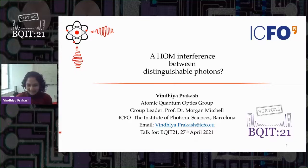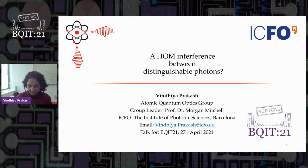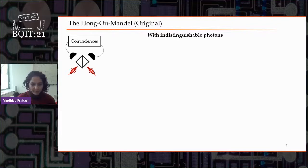It's an absolute pleasure participating in BQA21. Thank you very much for the invitation and congratulations for having moved it very seamlessly and efficiently to the virtual platform both last year and this year. So let me get started. Do you think a Hong-Ou-Mandel type of interference is possible between distinguishable photons?